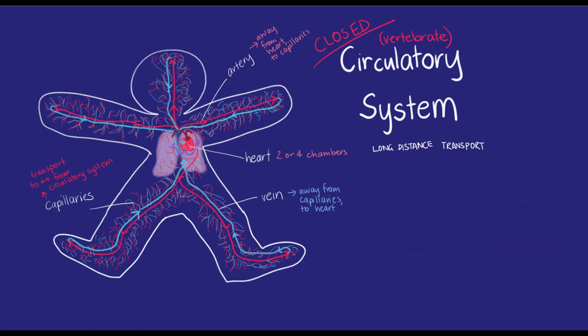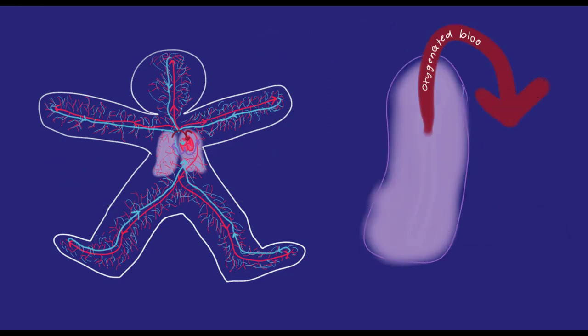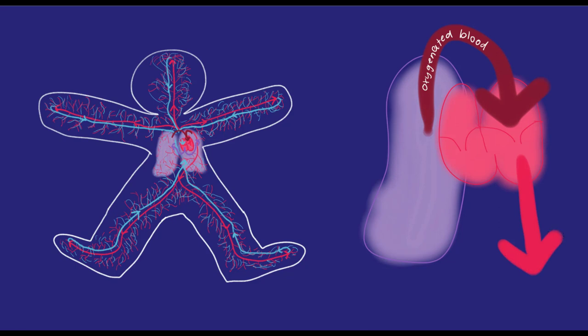The circulatory system is interlinked with the respiratory system. Blood cells pick up oxygen in the lungs and then travel to the heart to be pumped around the body.